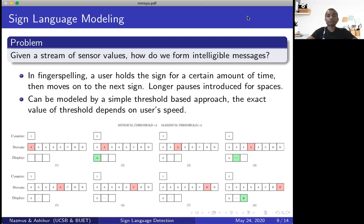So there are a couple of questions which were not extensively studied before when it came to sign language recognition using data gloves. One of the questions was regarding sign language modeling, that is, given a stream of sensor values, how do we form intelligible messages? So in fingerspelling, to express a letter, a user holds that letter for a certain amount of time and then moves on to the next sign. If the user introduces longer pause, that just means a space. So this whole thing can be captured using a very simple thresholding method, and that's what we did.